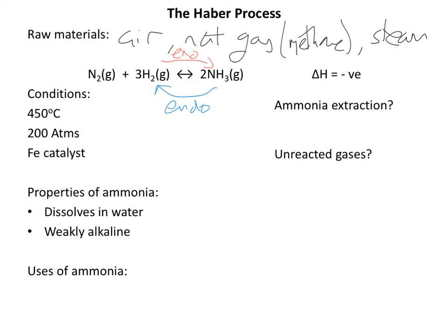Eventually we get an equilibrium situation where the rate of the forward reaction equals the rate of the backward reaction, and so the amount of product and the amount of reactant doesn't change. At that point we have to extract our ammonia, because there's no point leaving it any longer — you're not going to get any more ammonia. It's at equilibrium.